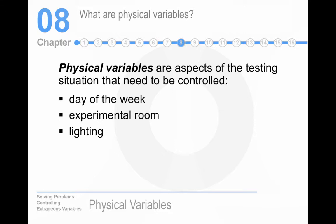For example, physical variables — aspects of the situation like the day of the week, the lighting, or the experimental room. No one runs research on Friday or Saturday nights with human participants, because the people who would show up for a study on a Saturday night would be different from people who come during the week. This is both an internal validity issue and an external validity issue — you can't generalize your results to the general population from who comes to a study on a Saturday night.